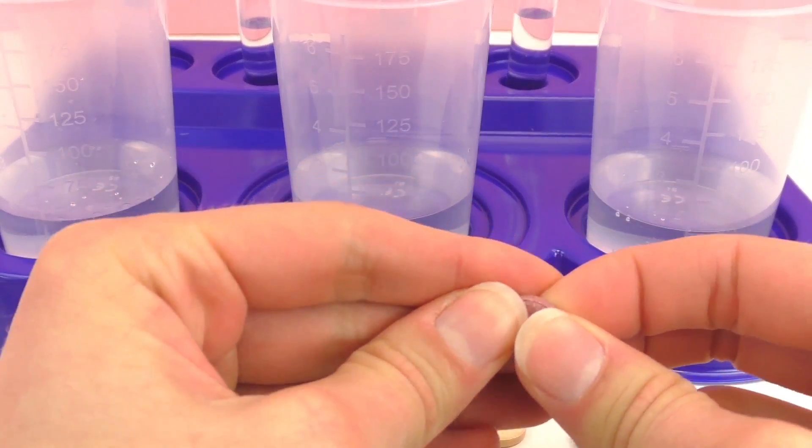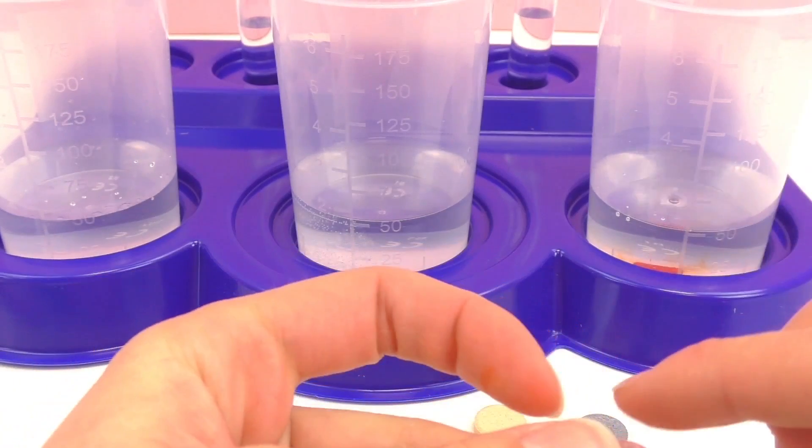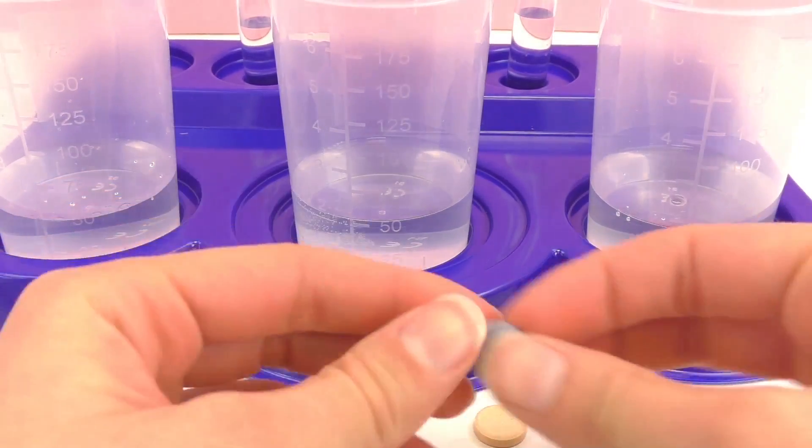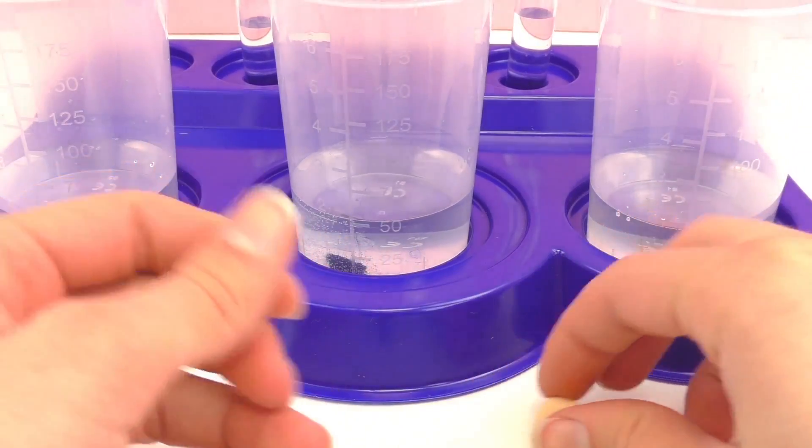So first off I'm just going to break each color pellet in half. I don't need all of them and then I'm going to drop this into the first cup of water. This is red, and then I'm going to drop blue, and then finally yellow.